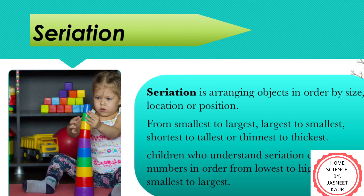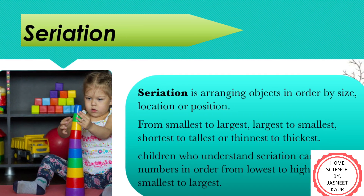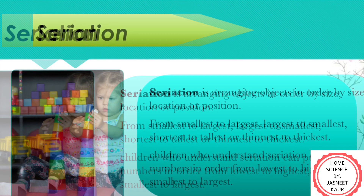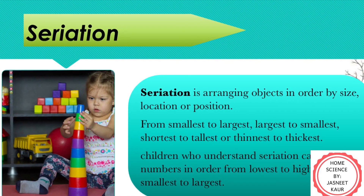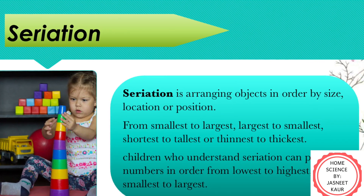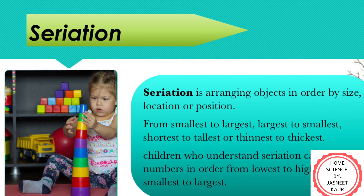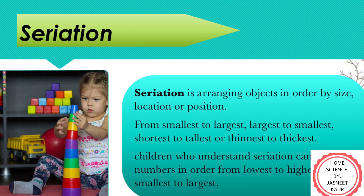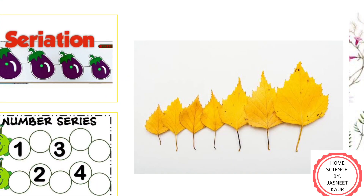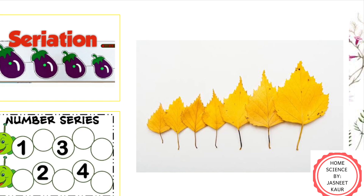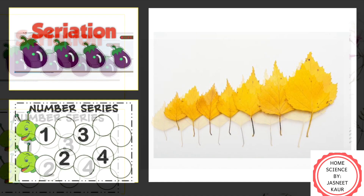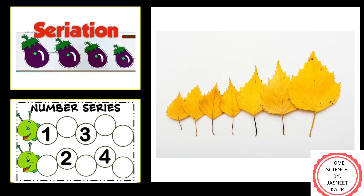The next cognitive ability is seriation. It is the ability to sort objects or situations according to their characteristics, such as size, color, shape, or type. For example, putting numbers in order from lowest to highest, or putting objects from smallest to biggest.